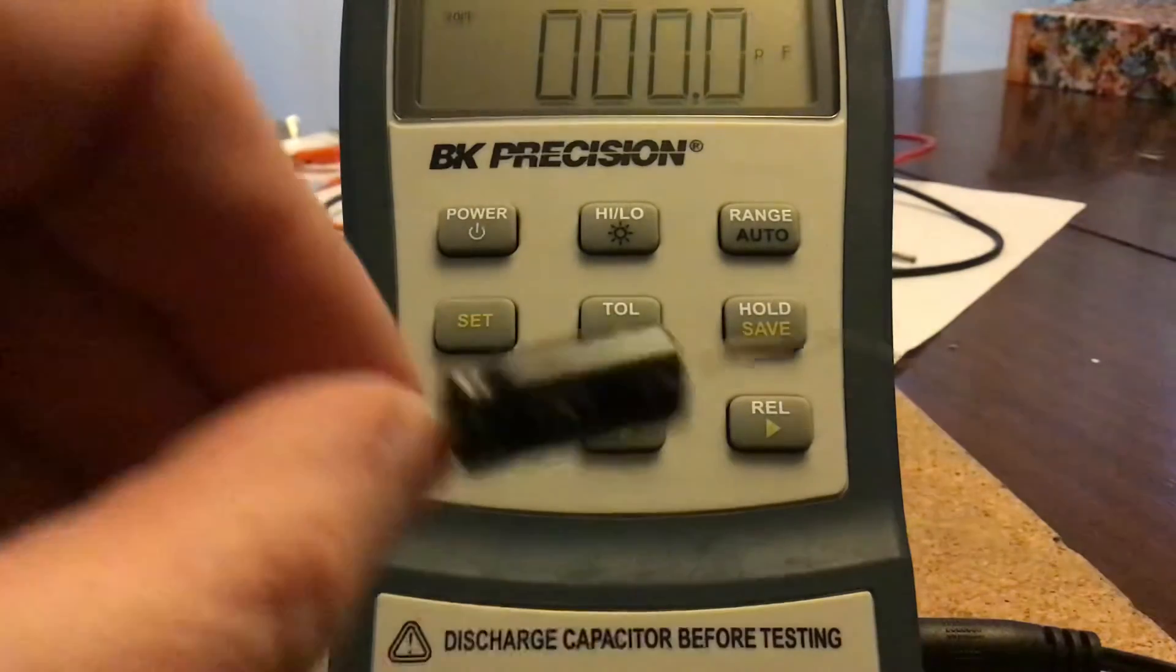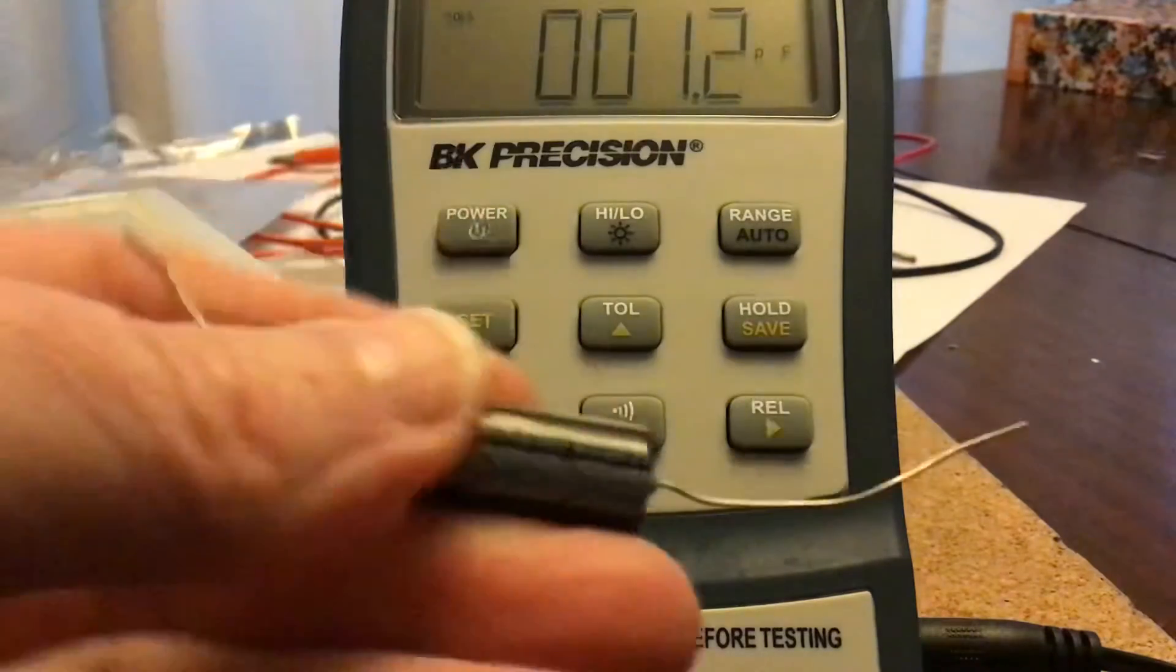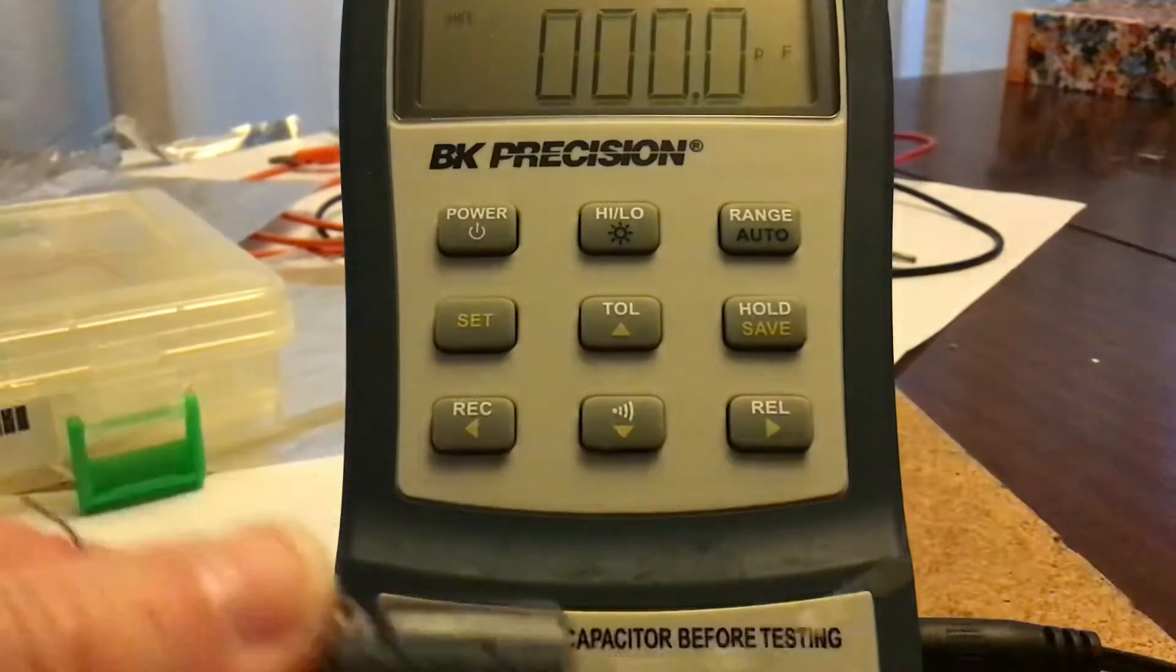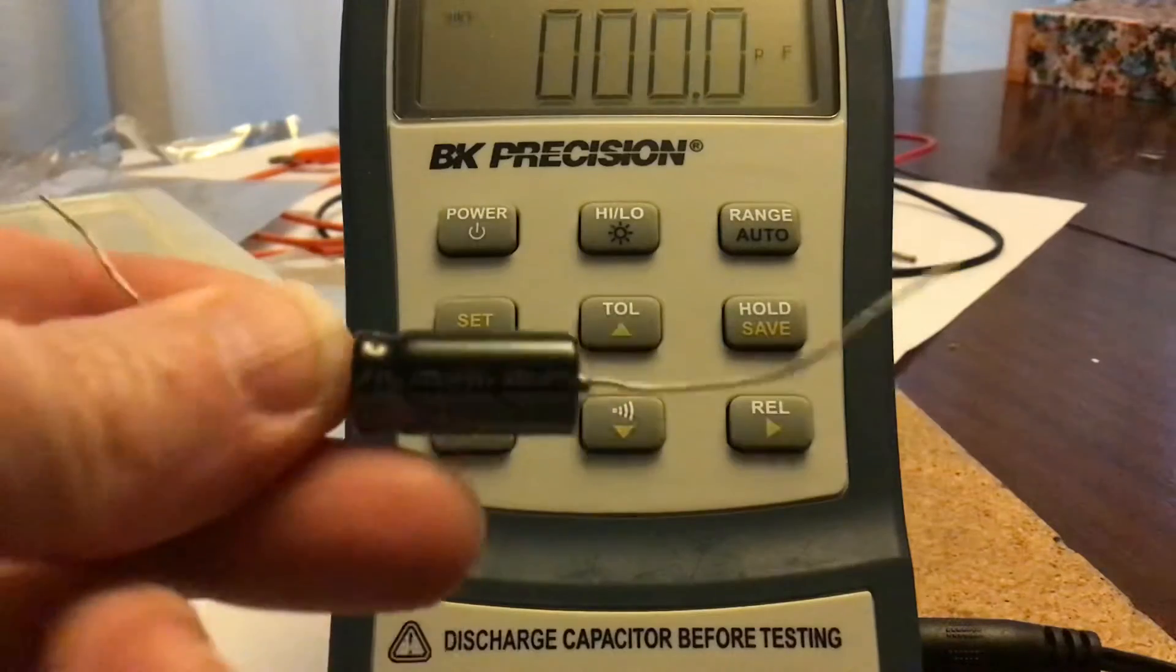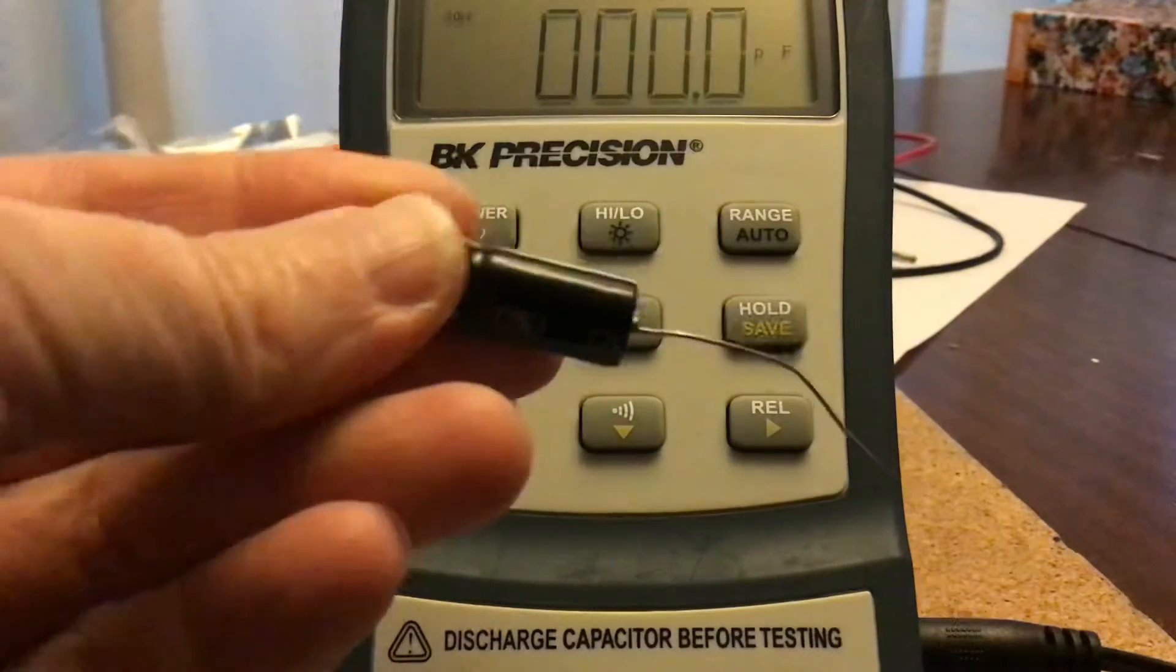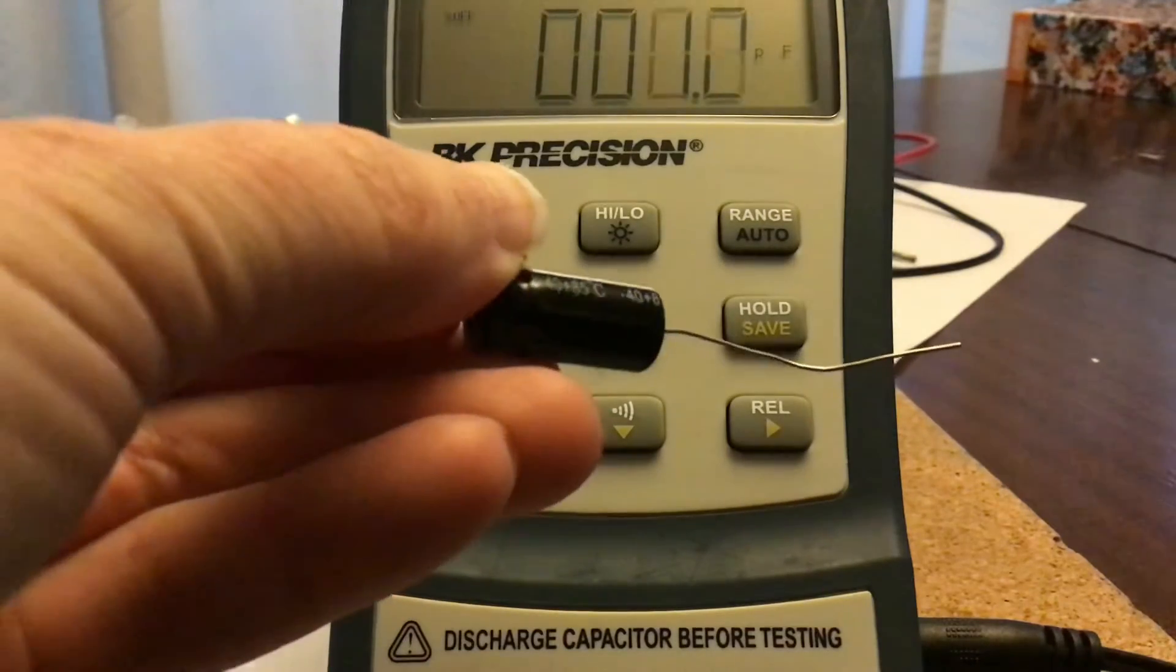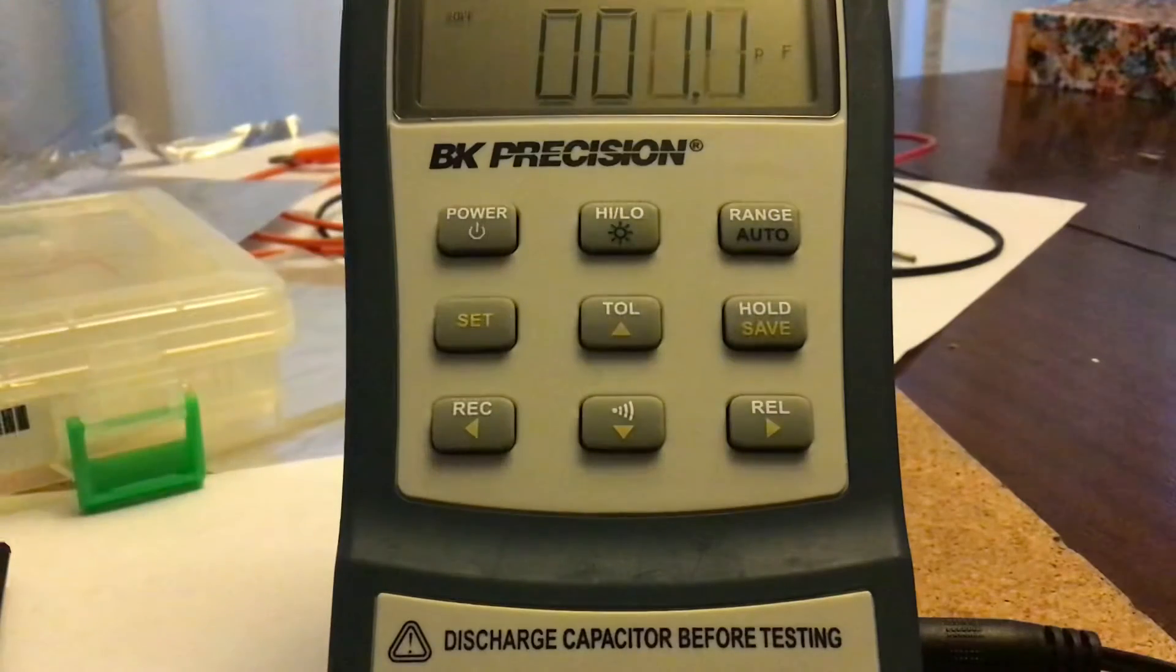This one, let's see if there's a tolerance on here. Some of the manufacturers will put it on, and some of them don't. This does not look like it has any tolerance either. This just tells you the temperature range, minus 40 to 85. So that doesn't tell you the tolerance.